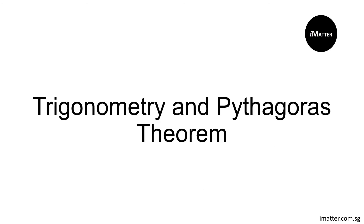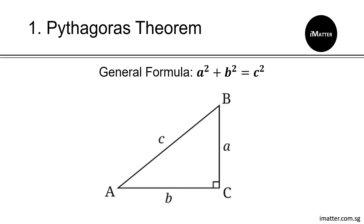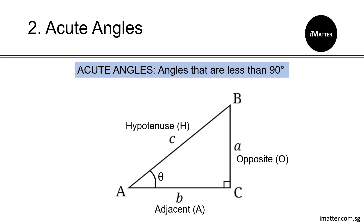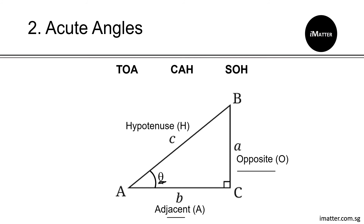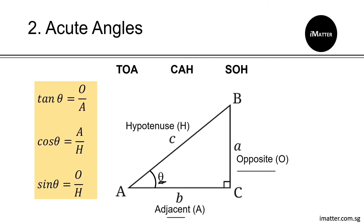The final topic is trigonometry and Pythagoras theorem. Pythagoras theorem applies only to right-angled triangles — with a 90-degree angle, the general formula is a² plus b² equals c², used only to find the sides of a triangle. Acute angles are angles less than 90 degrees, denoted by theta. To use trigonometry functions, label the right-angled triangle with respect to theta: A is the opposite, the side beside it is the adjacent, and the longest side is the hypotenuse. Using TOCASO: tan theta equals opposite over adjacent, cos theta equals adjacent over hypotenuse, and sin theta equals opposite over hypotenuse.